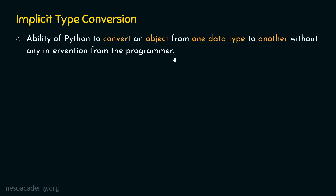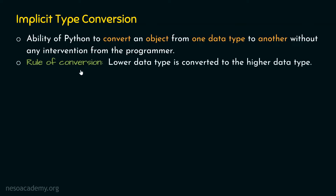Why does this happen in the first place? We will see with the help of an example why the conversion happens. For now, let's note that Python converts an object from one data type to another when the need persists. There is one rule Python always follows: the lower data type is converted to the higher data type.